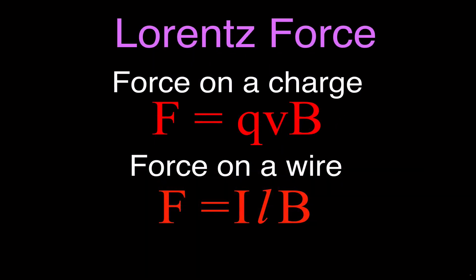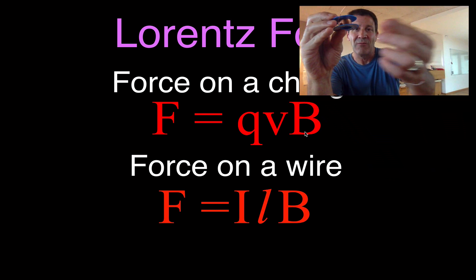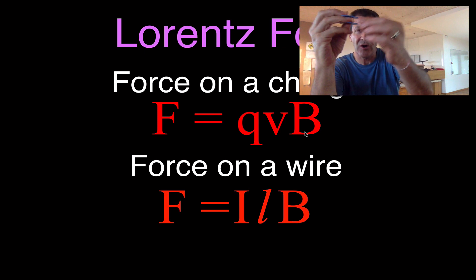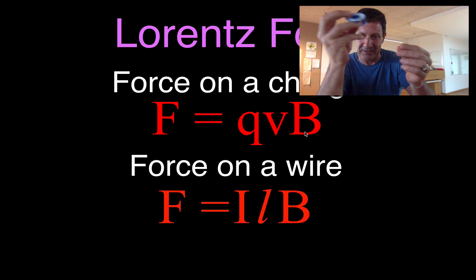This all has to do with the Lorentz force, which we've talked about in previous videos linked in the upper right-hand corner. It starts with a charge moving in a magnetic field. The force on that charge — the Lorentz force — is calculated as F = qvB, where q is the charge (commonly an electron), v is the velocity, and B is the magnetic field strength. We can then put that charge in a wire; moving charges in a wire constitute current, so we can also calculate the force on the wire itself using F = ILB, where I is the current, L is the length of wire in the magnetic field, and B is the magnetic field strength.